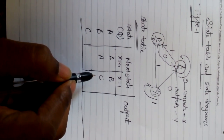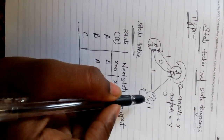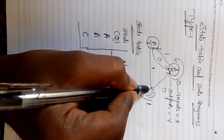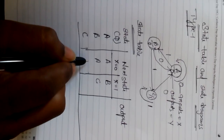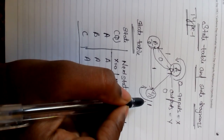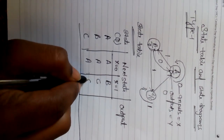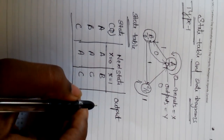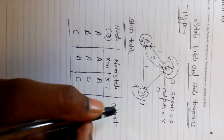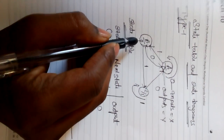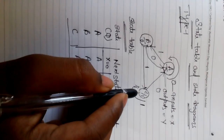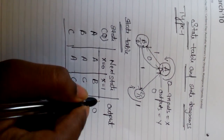At state C, when we give input as 0, the next state changes to A. When we give input as 1, the state remains at C. For the outputs: at A the output is 0, at B the output is 0, and at C the output is 1.